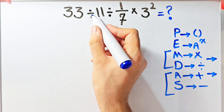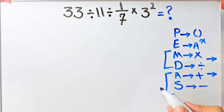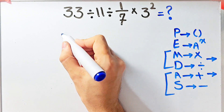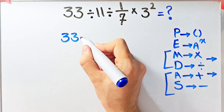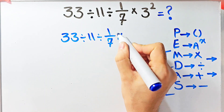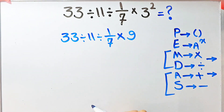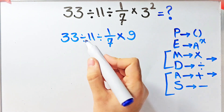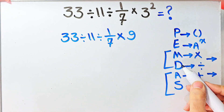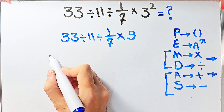When we have operations of the same priority in an expression, we start from the left. In this question we have division, multiplication, and exponent. According to the PEMDAS rule, we simplify the exponent first: 3 to the power of 2 equals 9. Now we have 33 divided by 11, divided by 1 over 7, then times 9.